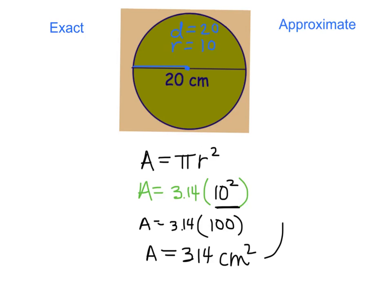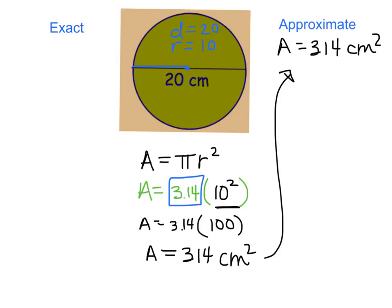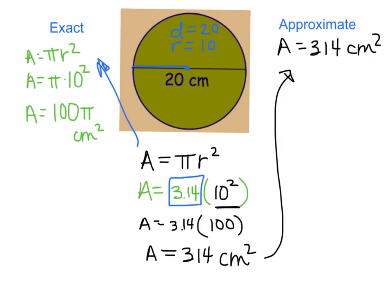That answer is the approximate area, because we rounded pi. 3.14 is not really what pi is — that's an estimate. If we want the exact area, it's more exact to just keep the pi symbol. So the area equals pi times 10 squared, which is 100 pi centimeters squared. That's a more exact answer, because pi is a number that goes on forever. Most of the time, you're going to be finding the approximate area.